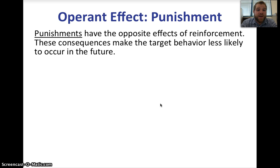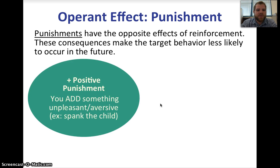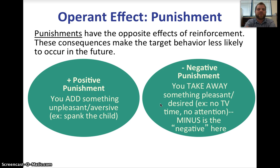Punishment has the opposite effects of reinforcement. These consequences make the target behavior less likely to occur in the future because you don't want to get hit, you don't want to go to your room, you don't want to have some negative consequence happen. So we're going to look at it the same way as reinforcement — there's positive punishment and negative punishment.